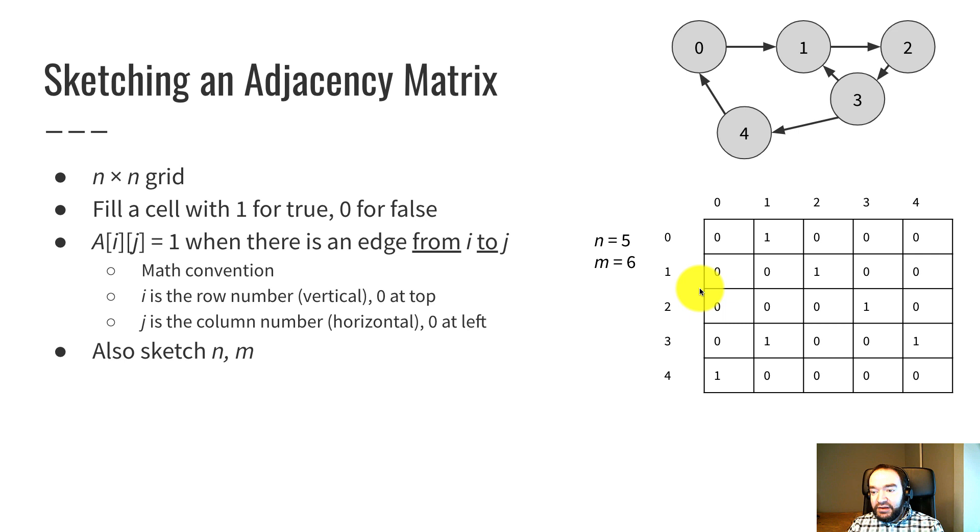And so there should be six ones in the matrix. And I see one, two, three, four, five, six. That's a quick check. That checks out.